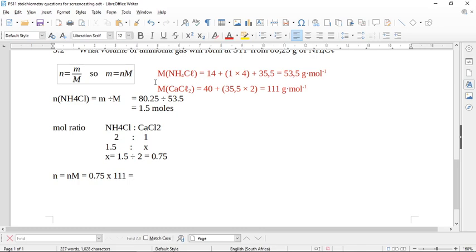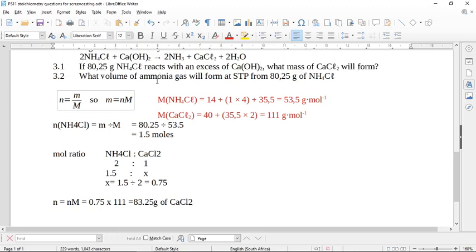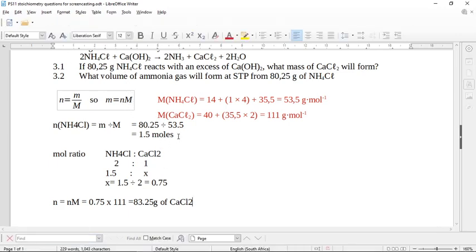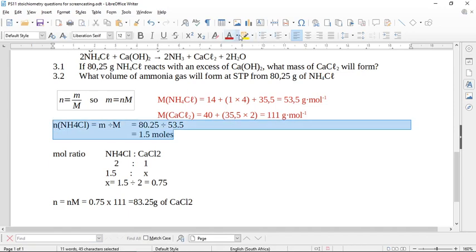So calculators at the ready. I get 83.25 grams of calcium chloride using the balanced equation knowing what's the limiting reaction. Now it says to you what volume of ammonia gas will form at STP from 80.25 grams of ammonium chloride. So this 80.25 and this 82.25, they're the same. So this calculation over here where we found the moles is going to work for the second half as well.